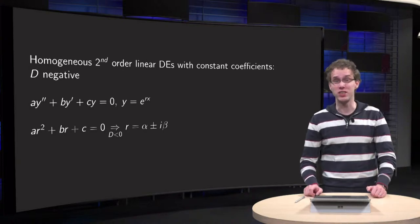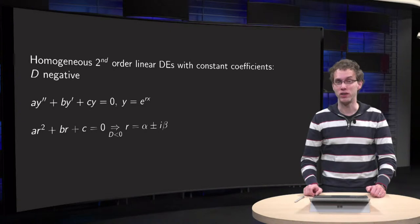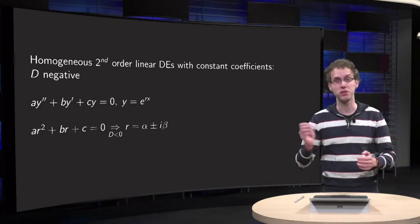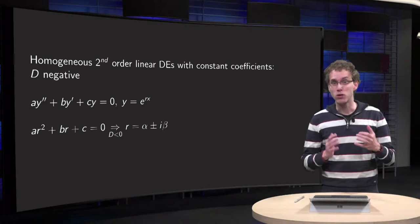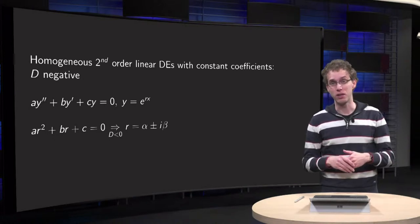We learned how to solve homogeneous second-order linear differential equations for d₀ and d-positive. But what about d-negative? In that case you get complex roots of your characteristic equation.